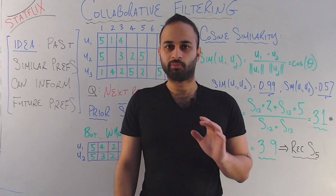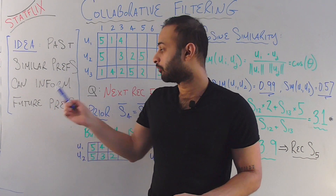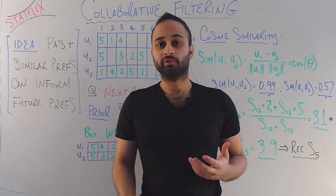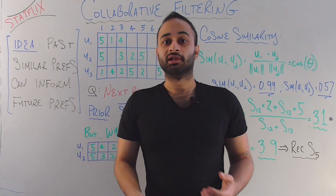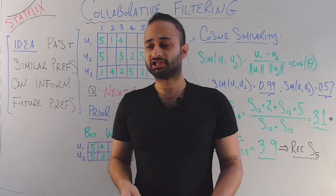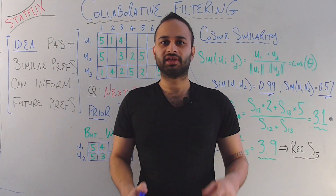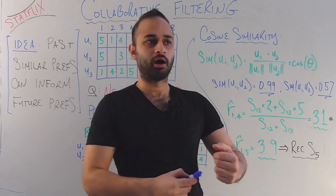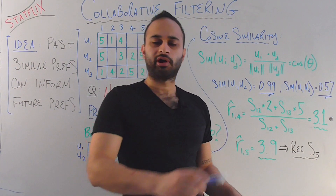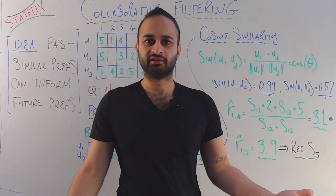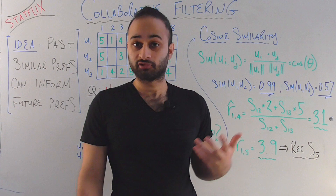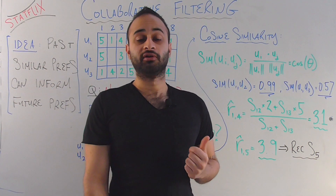The driving principle behind collaborative filtering is that past similar preferences can inform future preferences. There are many users on Statflix and they all have the ability to rate content — maybe between a score of one to five. If a couple of users have given more or less the same ratings to the same content, I consider them similar. So if I need to recommend something, I visit those similar users, see what they've liked, and recommend that. It's intuitive — I might like things my friends like because my friends are similar to me.